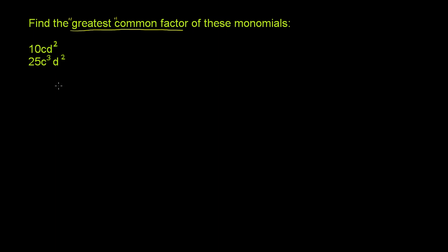So to find the greatest common factor, let's essentially break down each of these numbers into what we could call their prime factorization. But it's kind of a combination of the prime factorization of the numeric parts of the number, plus essentially the factorization of the variable parts.